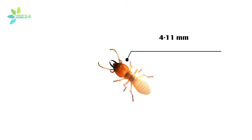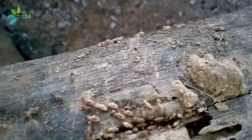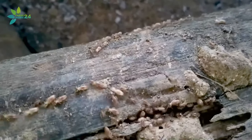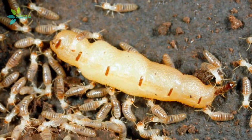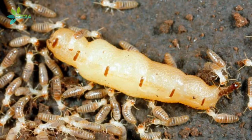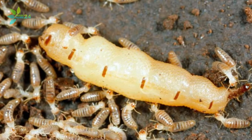Termites are soft-bodied insects commonly known as white ants. They are small in size, 4 to 11 millimeters, and have three distinct body parts: the head, thorax, and abdomen. Termite colonies have a number of different-looking individuals known as castes, each with its own duties. The largest member in a termite colony is the termite queen, which is also the longest-living insect in the world.